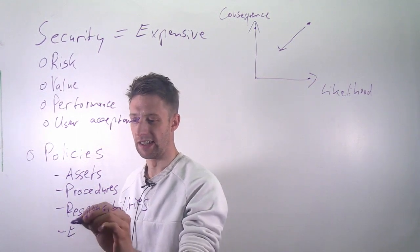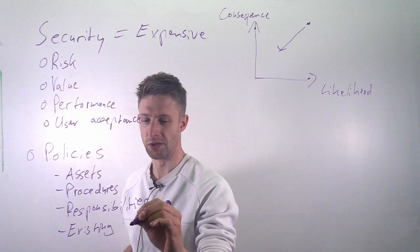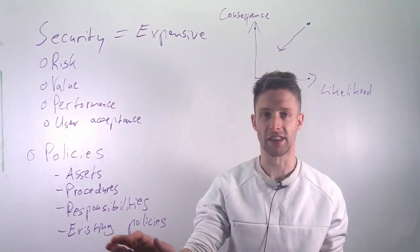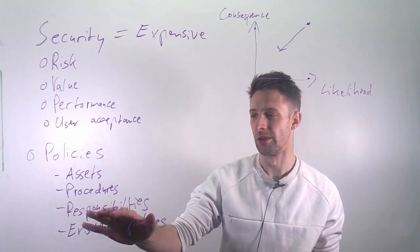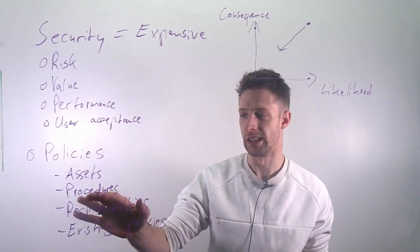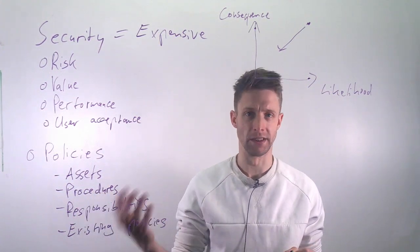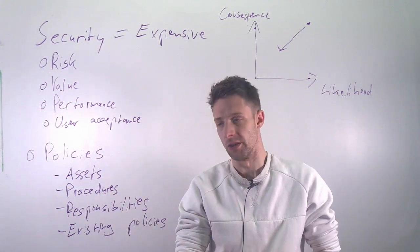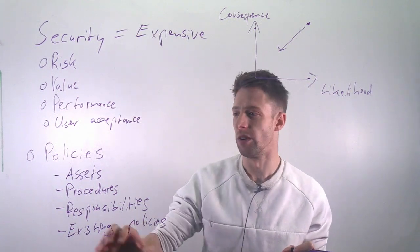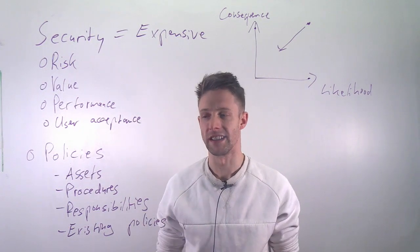Very often in companies there are existing policies already, so if you introduce a new system you don't have to come up with everything new. There might already be procedures or responsibilities in place — for example, saying that whenever you add a patient record you should do it on your own computer only, and it's not allowed to use a phone. These are typical things to go through when looking at application and operating security.